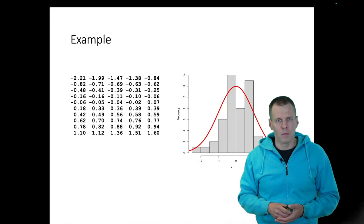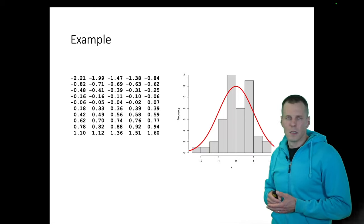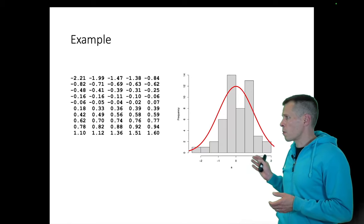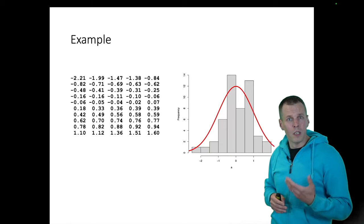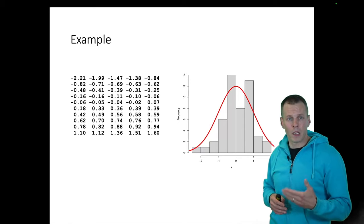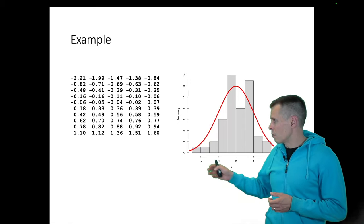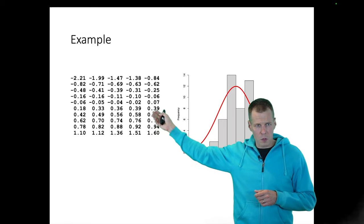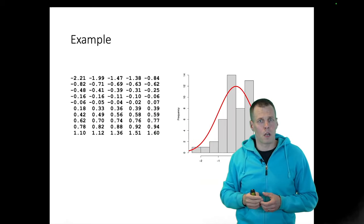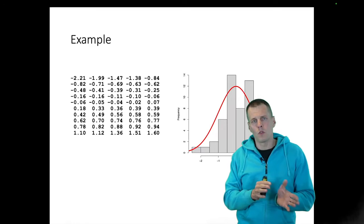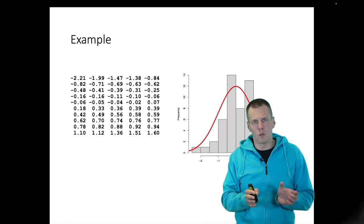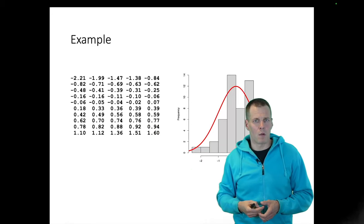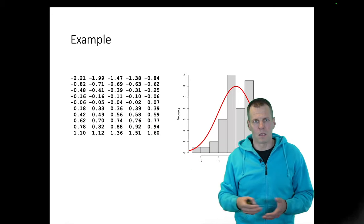Here's some data. This is a normal distribution with a mean of zero and standard deviation of one, and this is a histogram of a sample from that normal distribution — what normally distributed data might look like in reality. We can see that there are very few values below minus two and no values above two. Most observations are within plus or minus two standard deviations of the mean, and mostly they cluster close to zero.